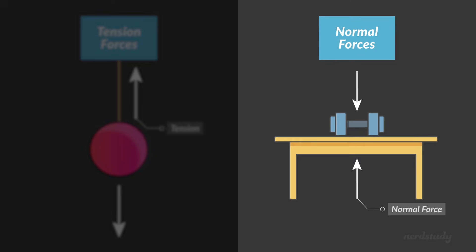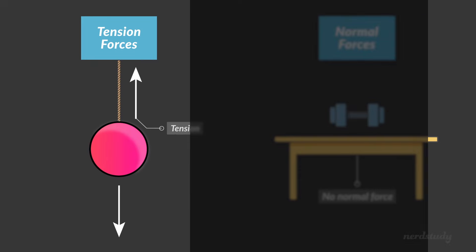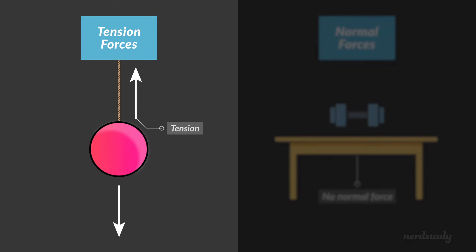Looking back at normal forces, it seems obvious that when an object is not pushing against a surface, the normal force must be zero. Tension forces are similar to this, but in an opposite sense. If an object is not pulling on a rope, the tension force is zero.